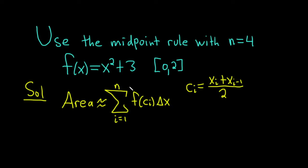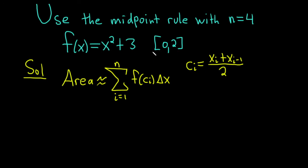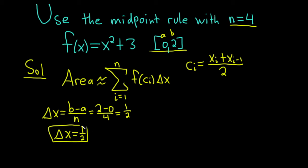So n is equal to 4 in this problem and our interval is 0 to 2. So our a here is going to be 0 and our b is going to be 2. So our delta x is b minus a over n. We're told n is 4. So this is going to be 2 minus 0 over 4. That's equal to 2 over 4 which is 1 half. That's really important. So the first thing you want to do in this problem is find delta x.